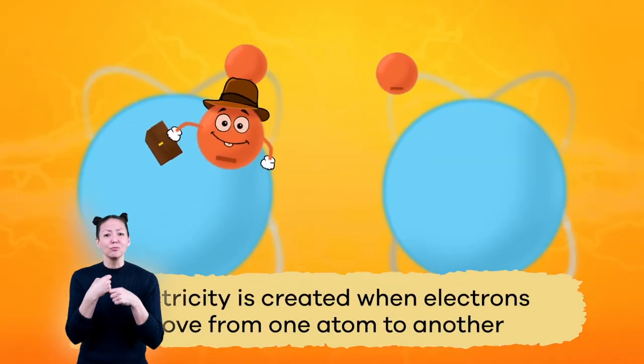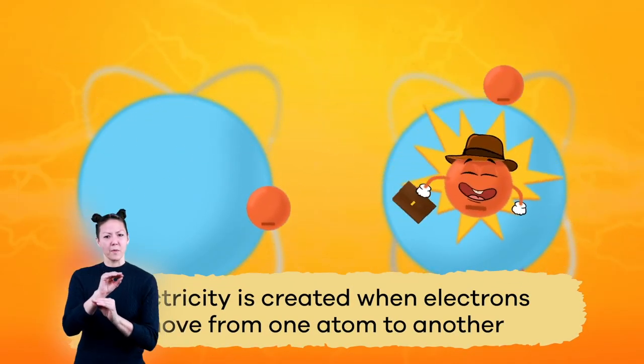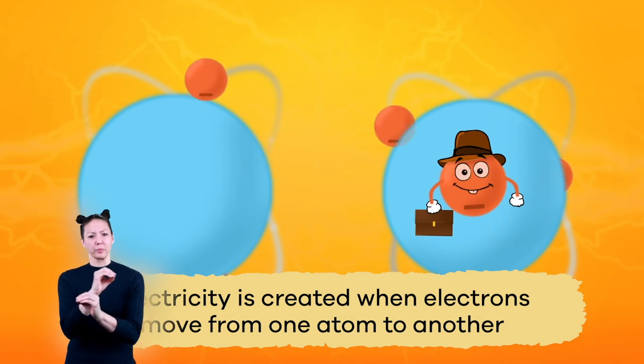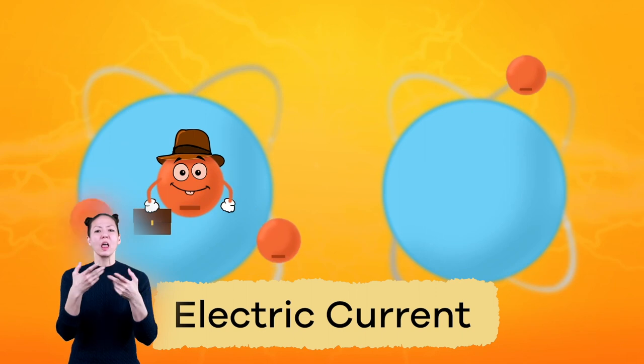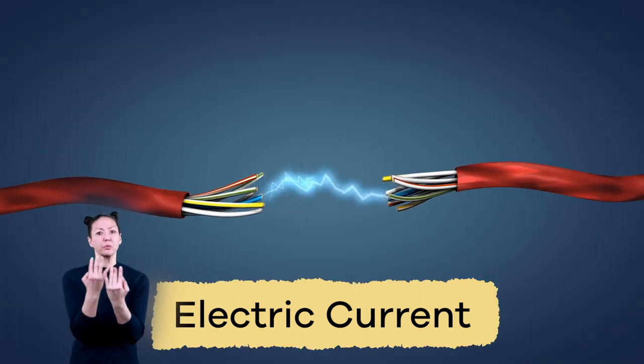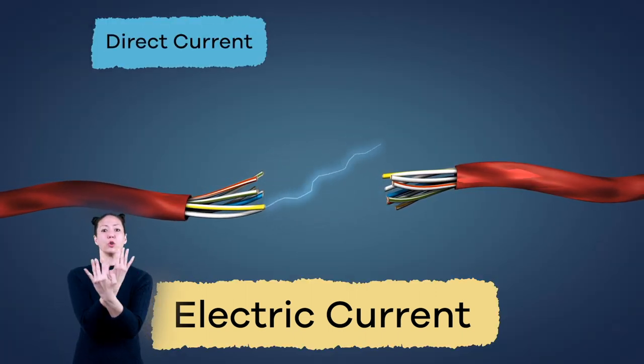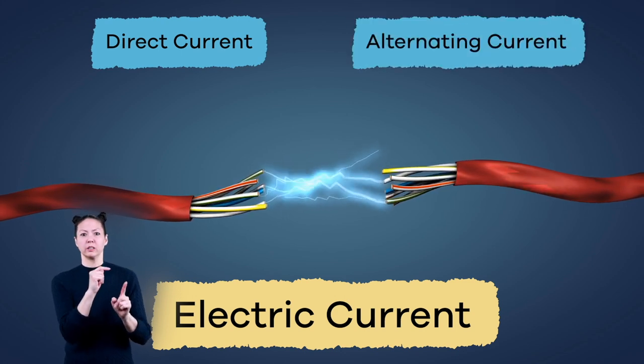Electricity is created when electrons move from one atom to another. When the electrons are moving, they produce something called an electric current. There are two types of electric currents, direct current and alternating current.